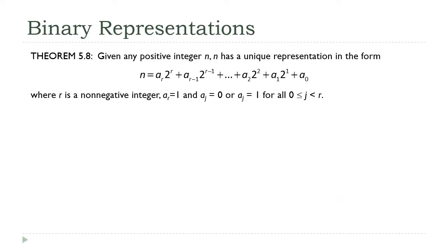In our earlier discussion of number theory, we spent some time talking about the binary representation of a decimal number and why that was important to computer science. In that discussion, we made a pretty big assumption — we implicitly assumed that it's possible to write every decimal integer in its corresponding binary form. In this section, we're going to use strong induction to prove both that it's possible to do that for every integer, and that the binary representation of a given integer is unique.